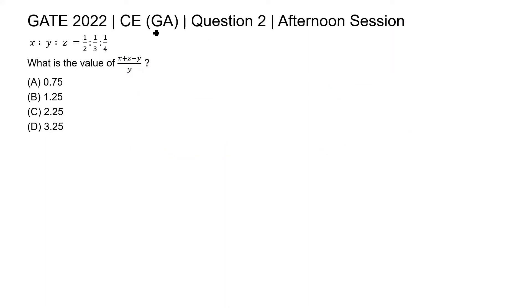This is question 2 of civil engineering general aptitude section of GATE 2022 afternoon session. X is to Y is to Z equal to 1 by 2 is to 1 by 3 is to 1 by 4. What is the value of X plus Z minus Y by Y?